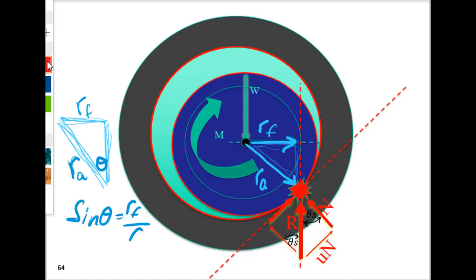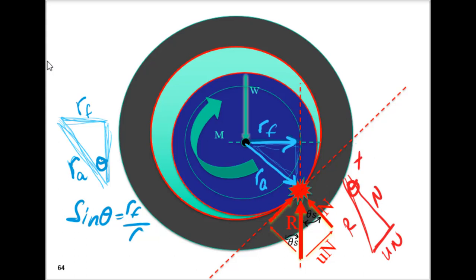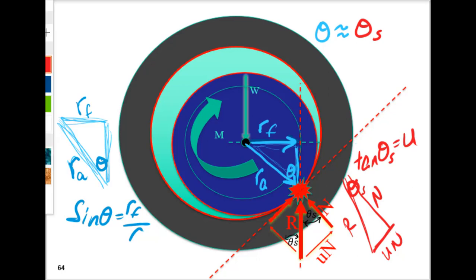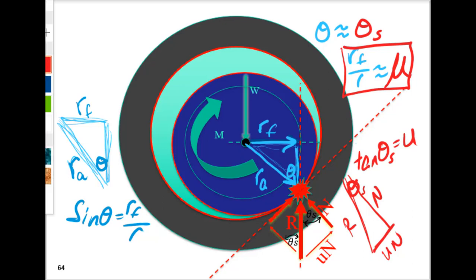For the friction force, we have the resultant — a combination of μN and N — with an angle defined by tangent of theta, which equals μ. Those two angles are adjacent to one another and are very similar. For a skinny triangle, sine theta is essentially equal to tangent theta, so the friction radius over the axle radius is essentially equal to the friction coefficient. The friction radius is therefore approximately μ times the axle radius.